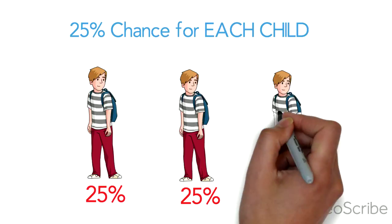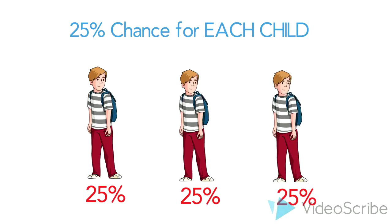Every child has an individual, independent probability of expressing the disease. In other words, the probability of the disease is the same for all children this couple has, because each parent has a 50% chance of passing on the affected allele.